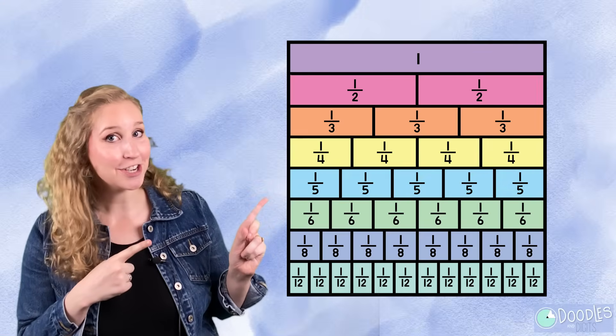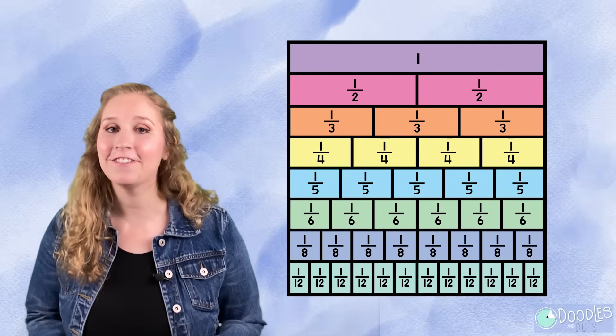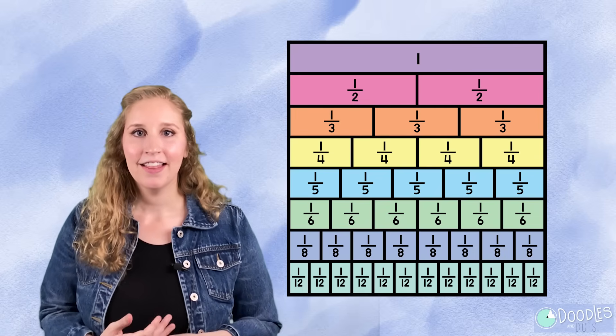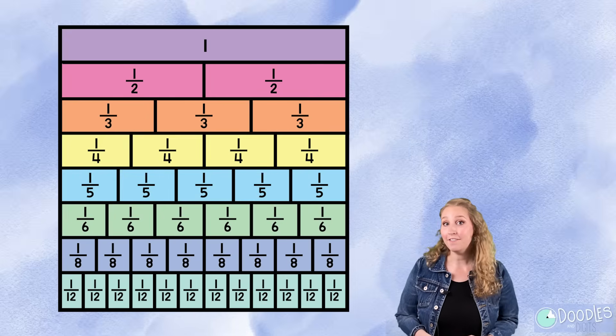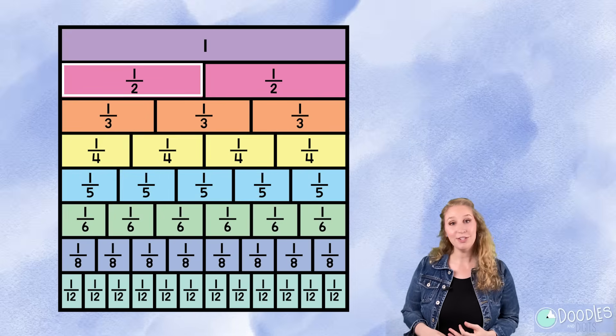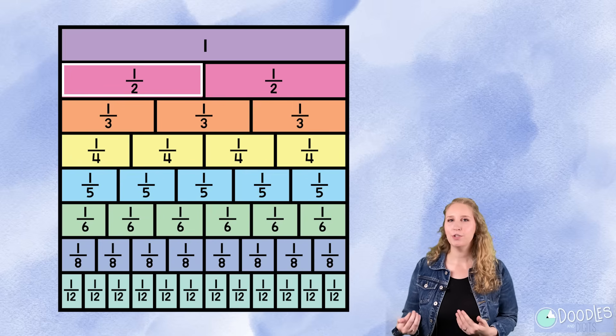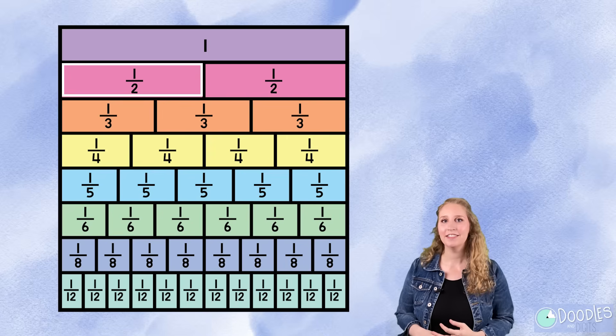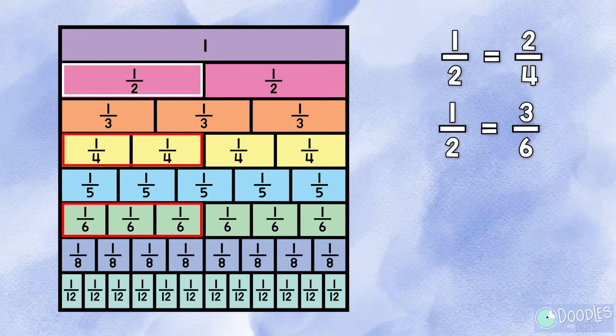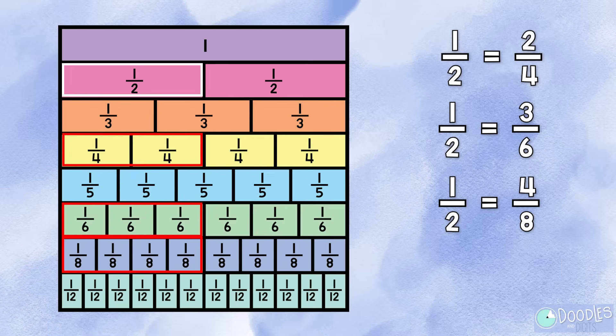This is a fraction chart. A fraction chart is a great way to find equivalent fractions and to see how fractions compare to one another. Let's look at this one right here. If we were trying to find a few equivalent fractions to one half, what do you notice? Do you see any that are close to one half? Do we see any that are exactly one half? One half is equivalent to two fourths. It's also equivalent to three sixths. One half is equivalent to four eighths. And finally, one half is equivalent to six twelfths. There are so many fractions equivalent to one half on this chart.